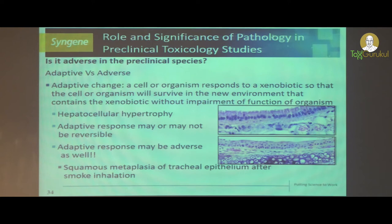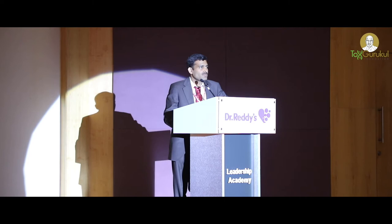Why does enzyme induction occur? When you load the system with a toxicant, the system tries to eliminate the toxicant by producing more enzymes responsible for the metabolism of that compound. As a result, there is more protein synthesis, the endoplasmic reticulum is enlarged, the cell is enlarged, and ultimately the organ is enlarged — it is actually an adaptive response. But sometimes this response becomes adverse when the adaptive capabilities are overwhelmed and the cell undergoes degeneration or necrosis.